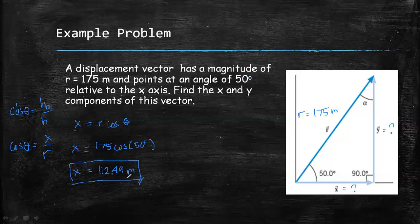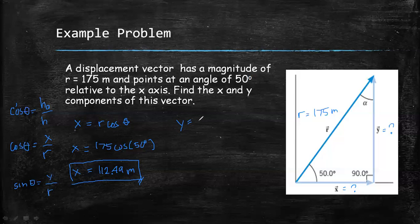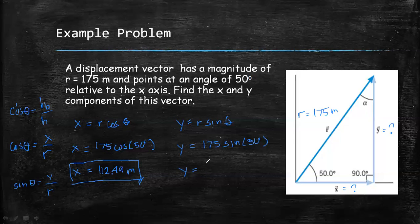We don't need to solve for the direction since it is the x component — we know that it is directed along the horizontal. Now to solve for the y component, again using trigonometric functions, sine theta equals the opposite side, which is the y component, over the hypotenuse r. So y equals r sine theta. Substituting the values: y equals 175 meters times sine 50 degrees, therefore the y component is equal to 134.06 meters.